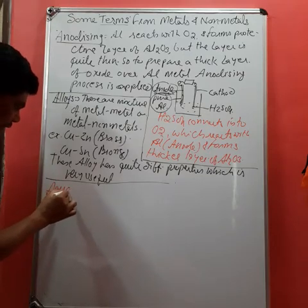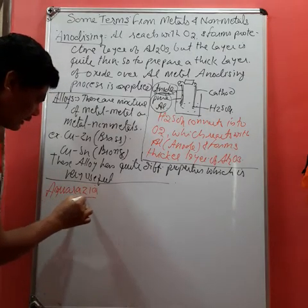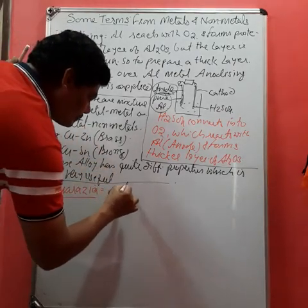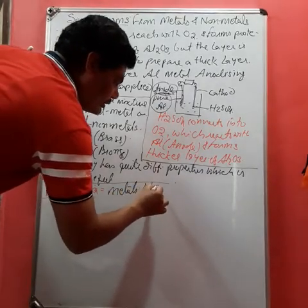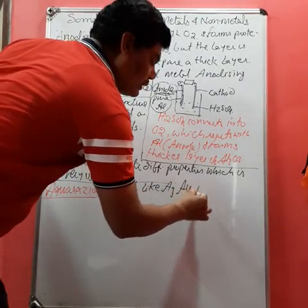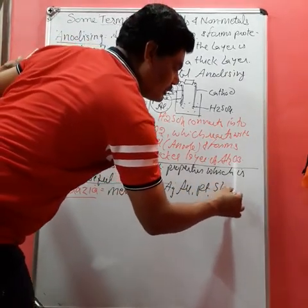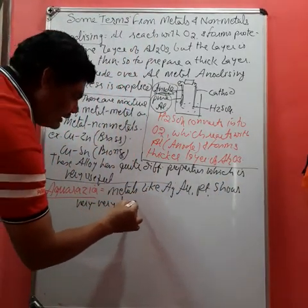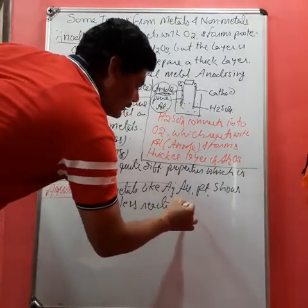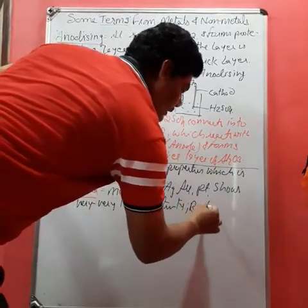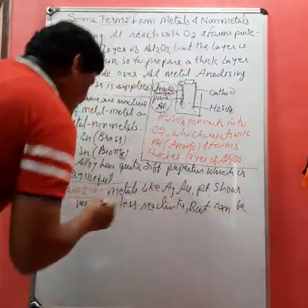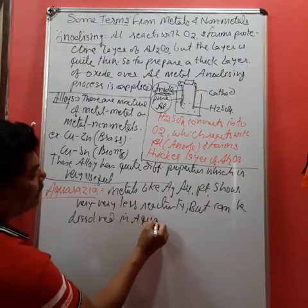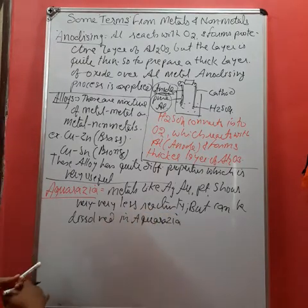You know that metals like silver, gold, and platinum show very low reactivity, but they can be dissolved in aqua regia.